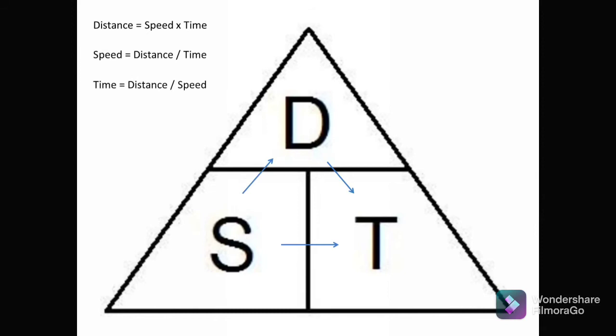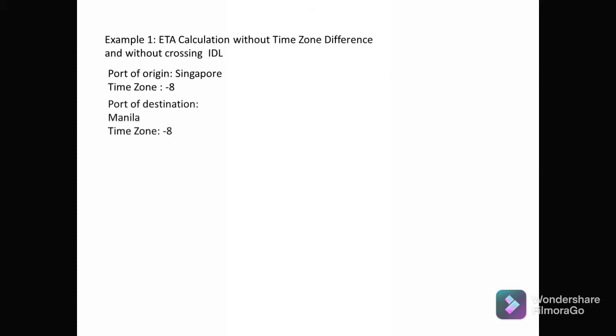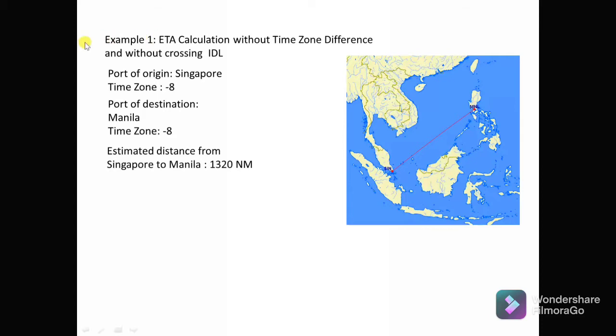Example number 1: ETA calculation without time zone difference and without crossing the IDL. The port of origin is Singapore — let's say a bunkering operation — with time zone negative 8. The port of destination is Manila, also time zone negative 8. The negative symbol simply means the country is in the eastern hemisphere; western hemisphere countries use a positive symbol.